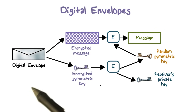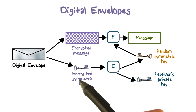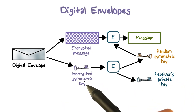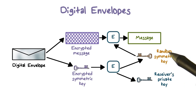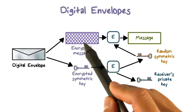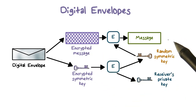On the receiving end, Bob can use his private key to decrypt the encrypted shared key. Once he gets the shared key, he can now decrypt the encrypted message and get the plain text message.